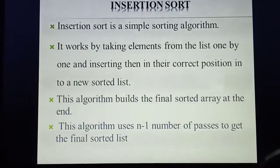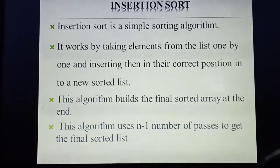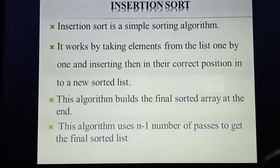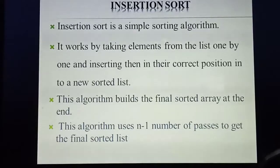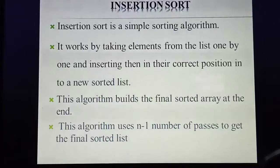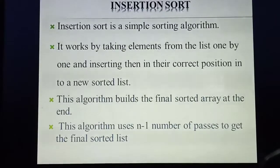So how does this sorting algorithm work? Listen carefully. It will take one element from the list. Already in a list a lot of elements are stored; from the list you take one element at a time. Then you compare whether that element is smaller than the next one or not. Then you arrange that element in the correct position order. After rearranging, you get a new sorted list. I'll explain with an example then you will understand.